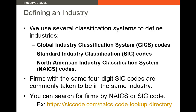The last classification system we'll talk about are the NAICS codes, or the North American Industry Classification System codes. These are a little more new than the SIC codes. SIC codes were created generally before the Internet was a thing. NAICS codes correct for that by having a lot more classifications for tech firms. Firms with the same six-digit NAICS code are generally seen to be in the same industry.